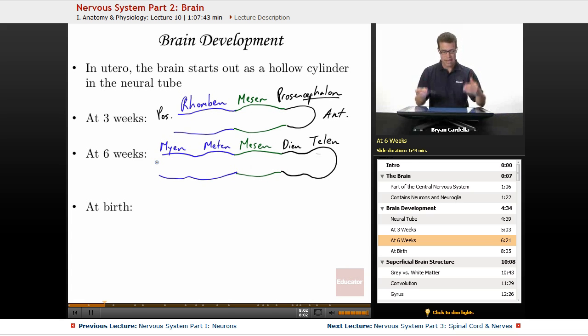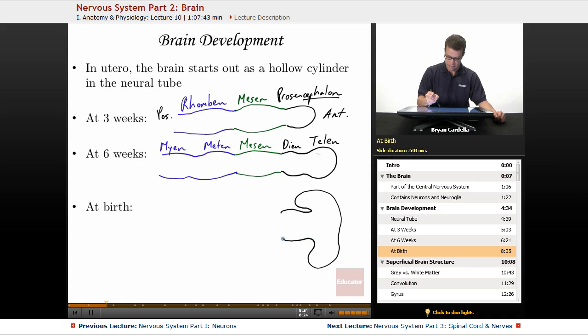We're going to jump ahead from six weeks to 40 weeks, the approximate time it takes for a baby to develop and be born. You're going to see names you've probably seen before regarding brain anatomy. The front gets a lot bigger.